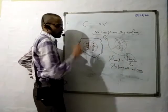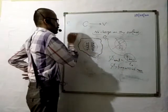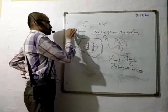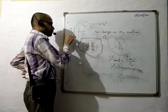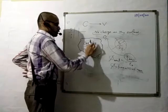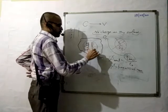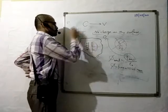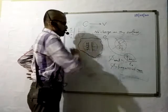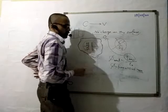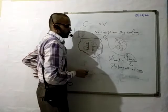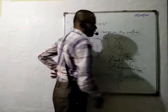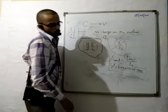One more time: the capacitor is charged from outside — positive on one plate and negative on the other. It is placed inside the closed surface, so the net enclosed charge is zero. Therefore, the flux will be zero.